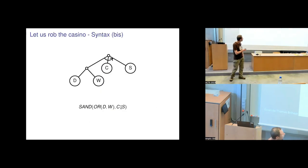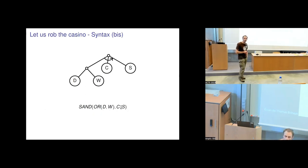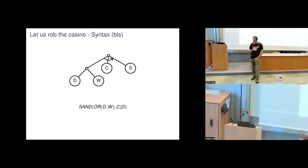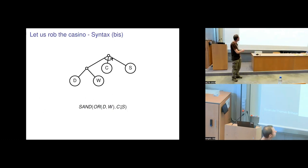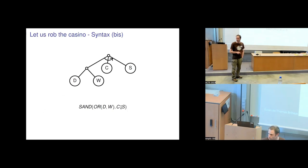With this, I can give the attack tree for the toy example: it is a sequential AND of entering either through the door or the window, then deactivating the camera, then opening the safe.